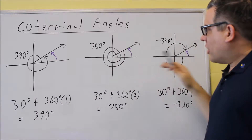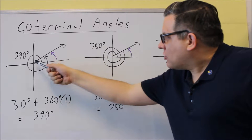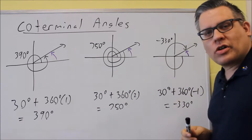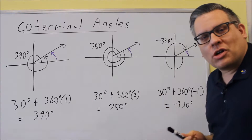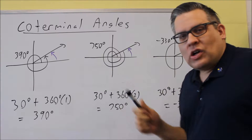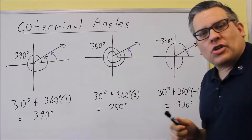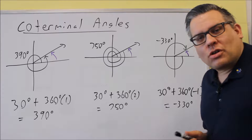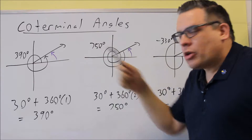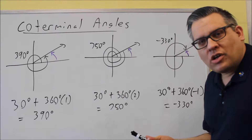I've illustrated some different ways that we can get to this purple angle. The purple angle in all three of these cases is 30 degrees. A coterminal angle is an angle different from 30 degrees, but when you draw it in standard position, it takes you to exactly the same spot. We would say those two angles are coterminal.